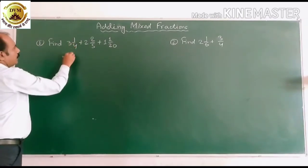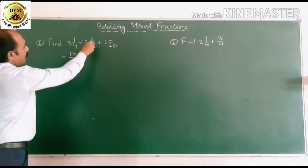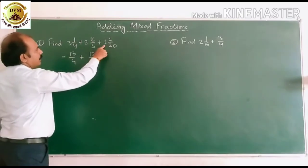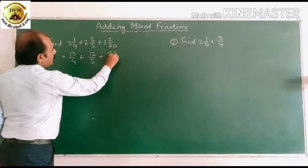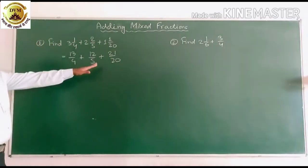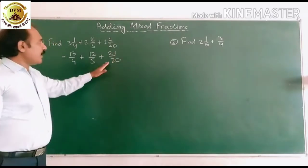For 3 times 4 plus 1, 13 by 4 plus, I have to change plus 2, 12 by 5 plus 21 by 20 plus 1 21 by 20. So here these are all become unlike fractions. So for addition we have to change this unlike fraction to like fraction.